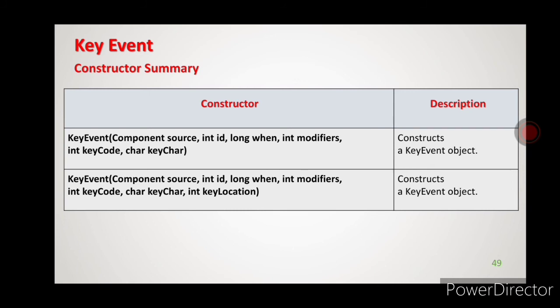These are the parameters the first constructor takes. The second constructor has one extra parameter: key location. Key location means on the keyboard, in which location that key is present — that integer constant for key location will be returned.